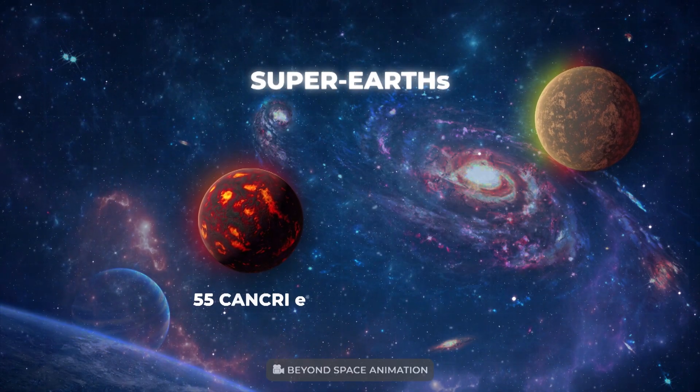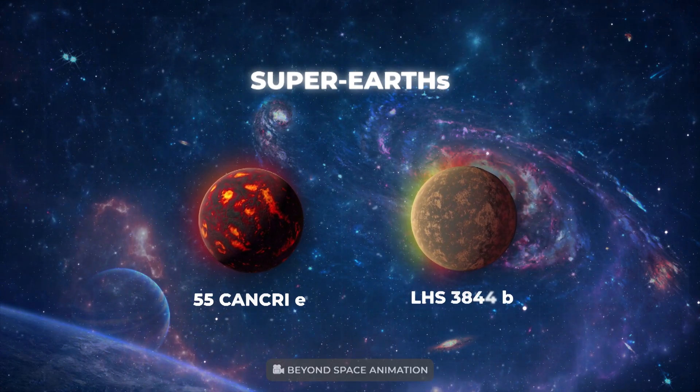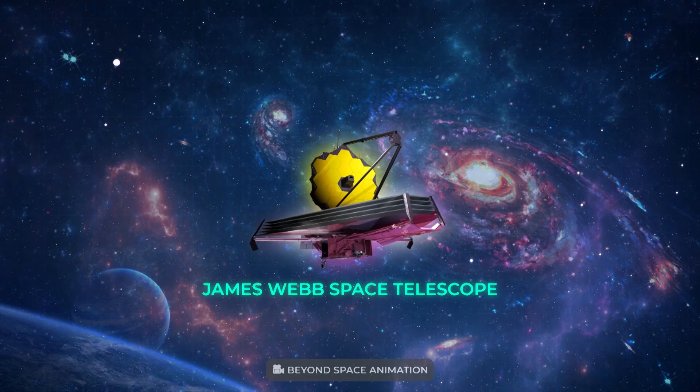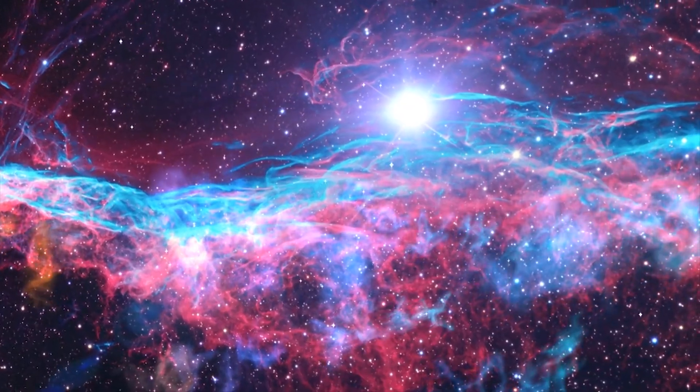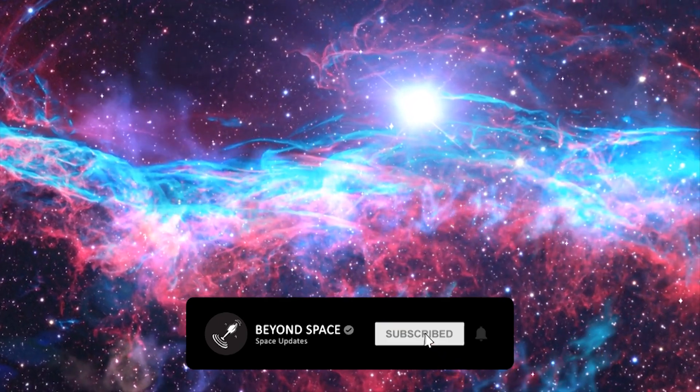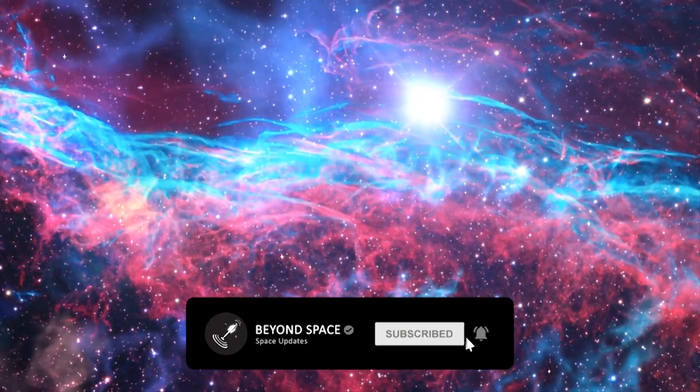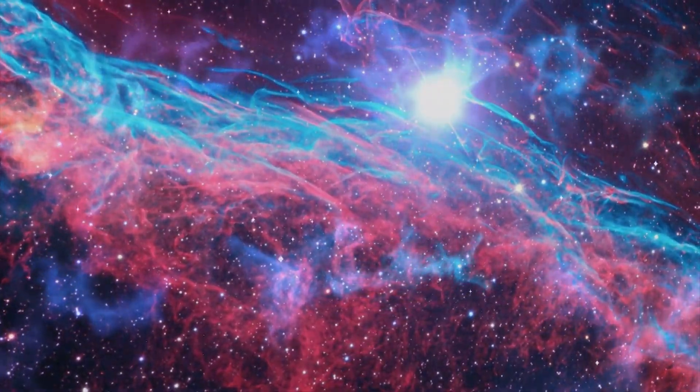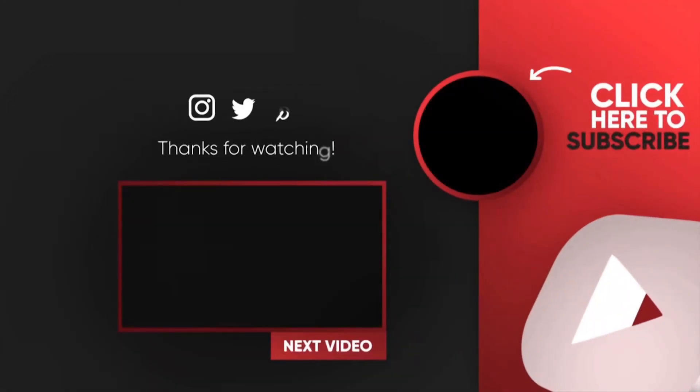These observations of 55 Cancri e and LHS 3844b will be conducted as part of Webb's Cycle 1 General Observers program. Leave a like, subscribe and click the bell icon to not miss an update on the James Webb Space Telescope. See you in the next video. Watch this video to know how the first images from the James Webb Space Telescope shocked scientists.